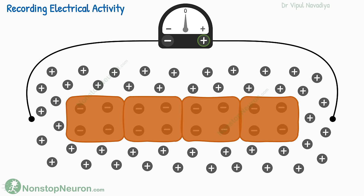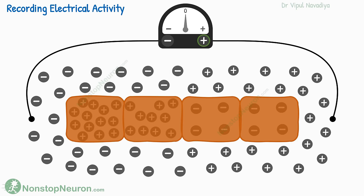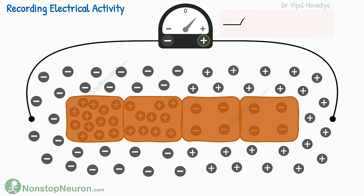Now let's say the cells are stimulated from this end. This will depolarize cells near this end. During depolarization, the positive ions rush into the cells, making the outside of the cell electronegative. The action potential has not yet reached the other end, so the cells there are still in a polarized resting state with electropositivity outside. So at this point, the potential at this electrode is positive with respect to the other electrode, and the meter shows a positive reading. On graph paper, it's recorded as an upward wave.